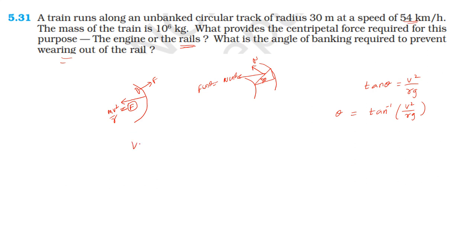The speed is 54 km per hour. Converting from km/h to m/s by multiplying by 5/18, since 1 km/h equals 5/18 m/s, the speed becomes 15 m/s. Then theta is equal to tan inverse of 15 squared.